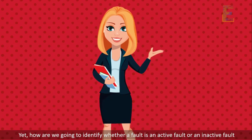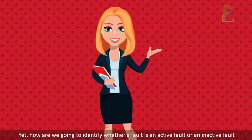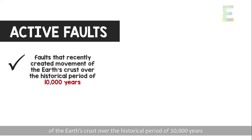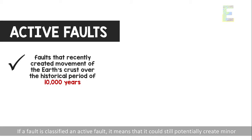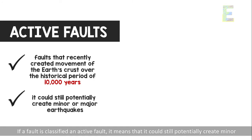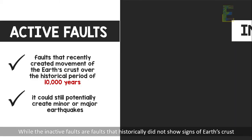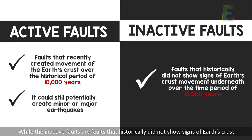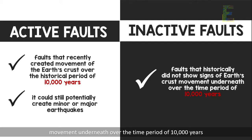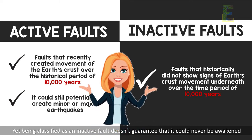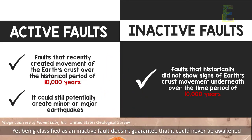How are we going to identify whether a fault is an active fault or an inactive fault? Simply, active faults are faults that recently created movements of the Earth's crust over the historical period of 10,000 years, meaning it could still potentially create minor or major earthquakes over time. While inactive faults are faults that historically did not show signs of Earth's crust movement over the time period of 10,000 years, yet being classified as an inactive fault doesn't guarantee that it could never be awakened and be active again.